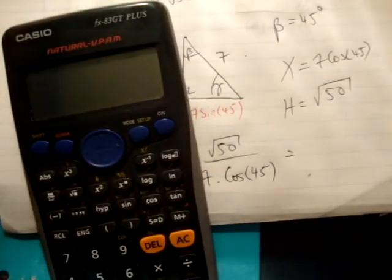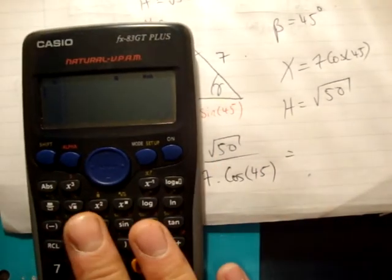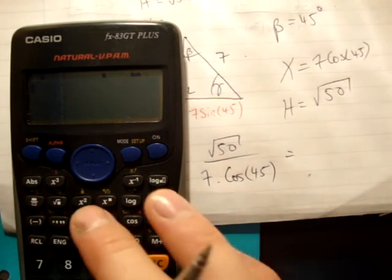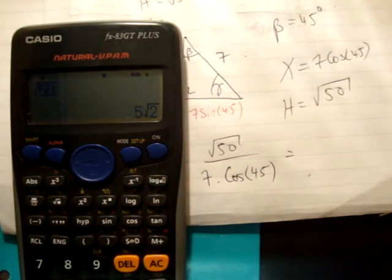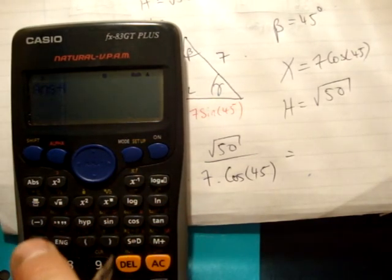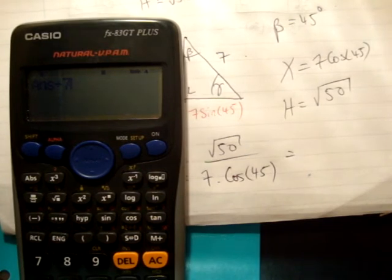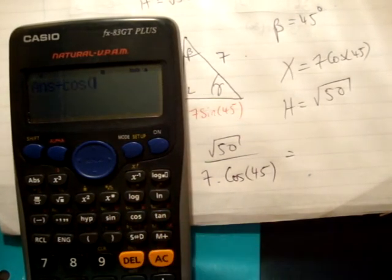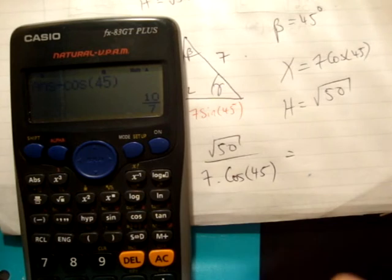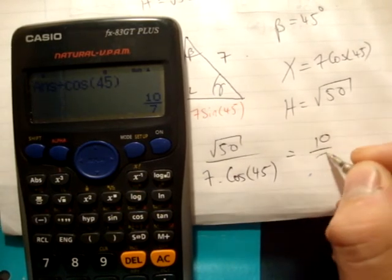Let's plug that into the calculator and see what we get. You can see that just about there. So we go root 50, divide that by 7, divide that by the cos 45, and you get 10 over 7.